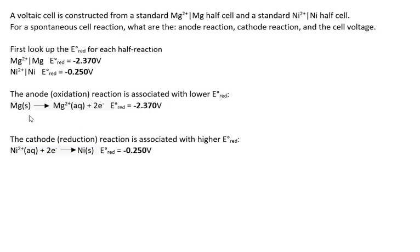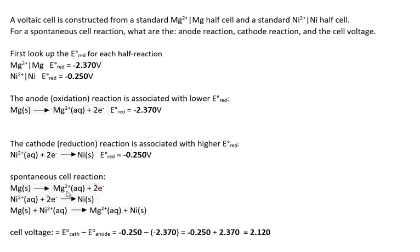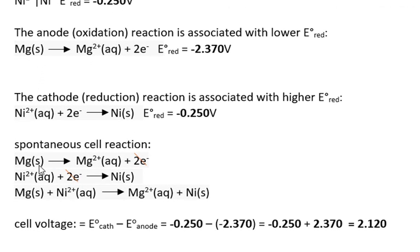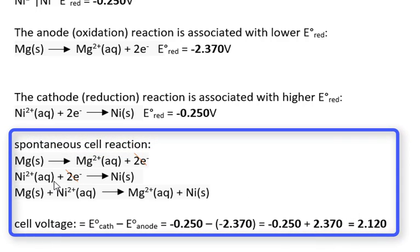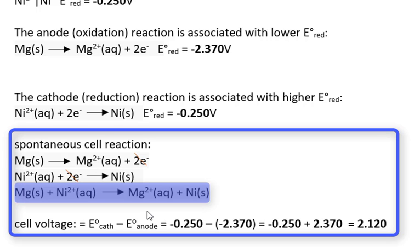Notice that when we reverse the equation for the magnesium, we do not reverse the sign of the voltage. That is because when we apply these voltages to figure out the cell voltage, we enter them in their reduction values. The spontaneous cell reaction is the magnesium oxidation half-reaction combined with the nickel reduction half-reaction. We can add these two half-reactions as-is because they are already mass-balanced and charge-balanced, giving us the complete redox cell reaction.